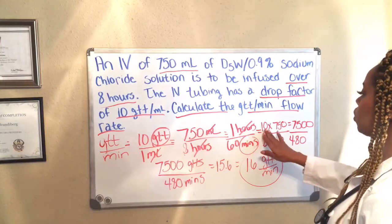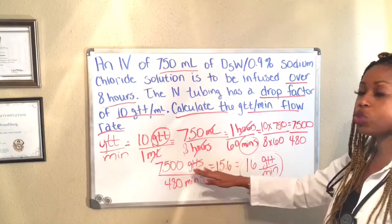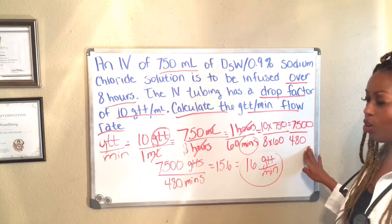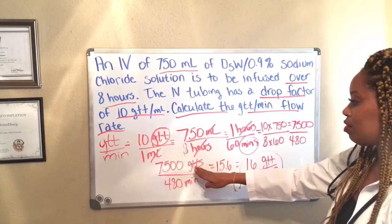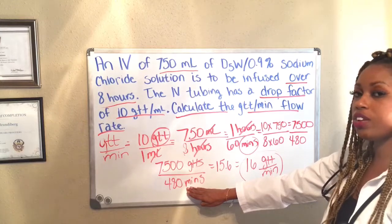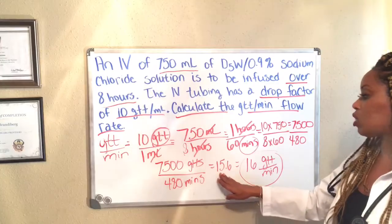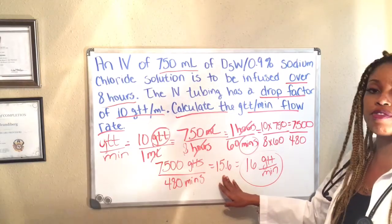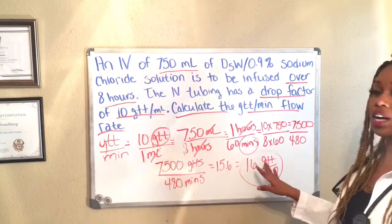I multiply across: 10 times 750 gives me 7,500 drips. At the bottom, 8 times 60 leaves me with 480 minutes. So I'm left with 7,500 drips over 480 minutes. Dividing gives 15.6. We always round to the nearest drip. Since I have 15.6 drips, I round up to 16 drips per minute. If it had been 15.1, I would have left it at 15 drips per minute. But being that this number is over 5, I round up to 16 drips per minute.